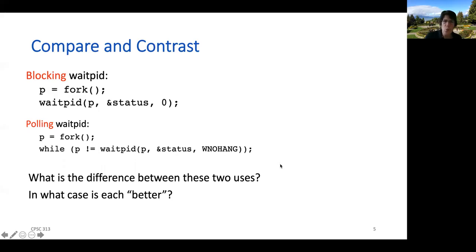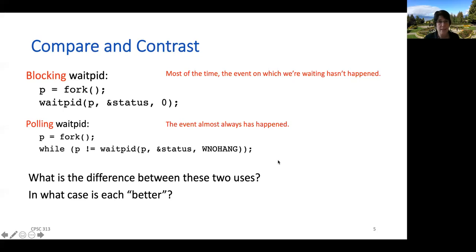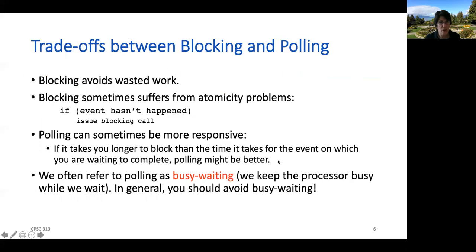Is one of these approaches better than the other, or are there different situations when one is better? You might think polling is really dumb — why keep checking if you can just pause and wait? Blocking makes a lot of sense when the event on which we're waiting probably hasn't happened yet and it's going to take a while. In contrast, if the event has almost always happened and it's a very rapid event, polling can actually make more sense, because the process of going to sleep and waking back up can take some time. If things are happening really quickly, polling might be a better solution.